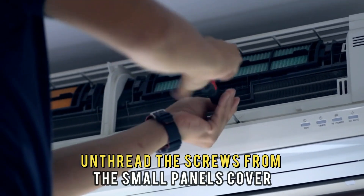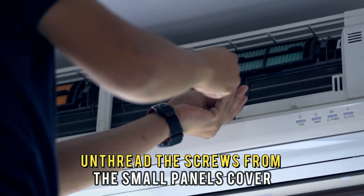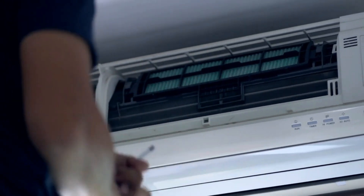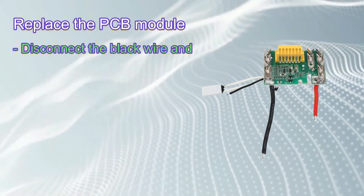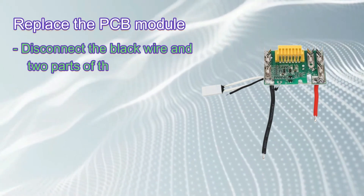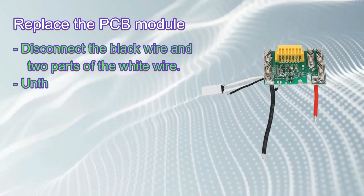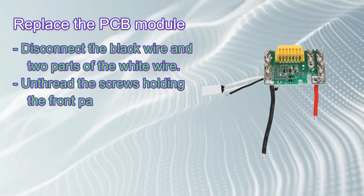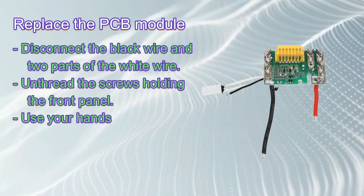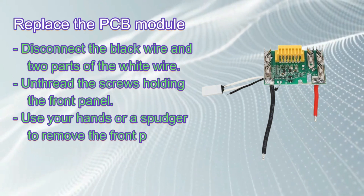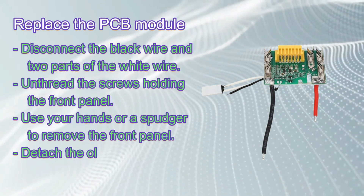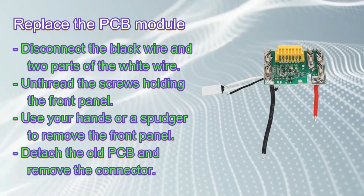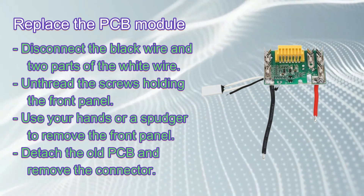Unthread the screws from the small panels cover and remove the cover. Disconnect the black wire and two parts of the white wire. Unthread the screws holding the front panel. Use your hands or a spudger to remove the front panel. Detach the old PCB and remove the connector.